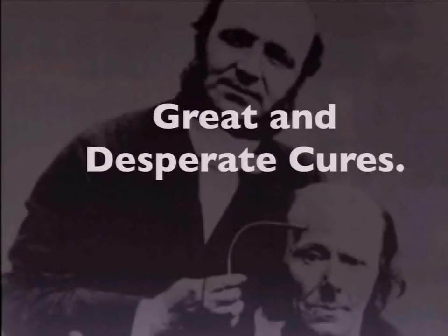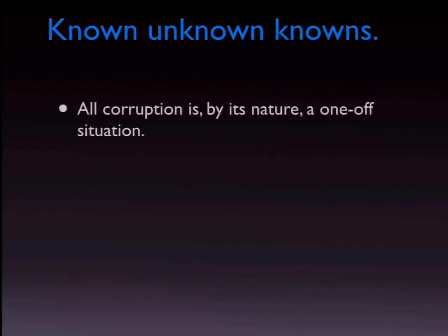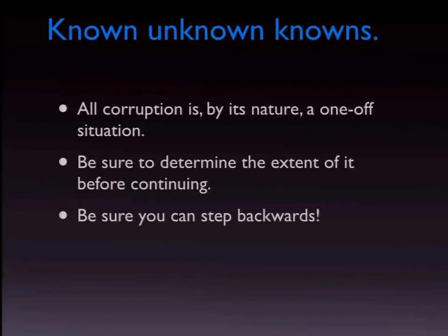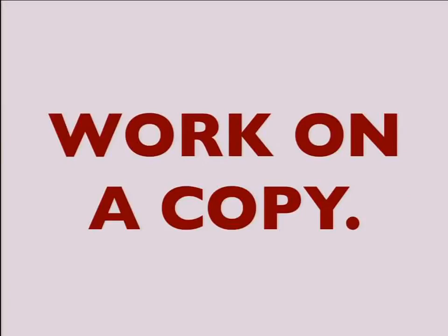Sometimes all of this doesn't work and things are really badly screwed up. The problem with corruption is that by its nature it's a one-off situation — the universe doesn't give us a nice list of the five types of corruption that can happen. Be sure to determine the extent before continuing, and make sure you can step backwards, because all of these things require you to modify the underlying data — frequently destroying data in the process. There are no recipes, and remember: work on a copy.